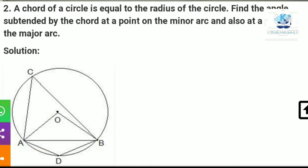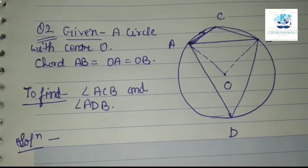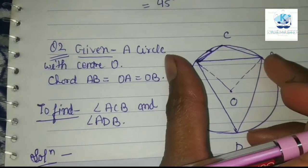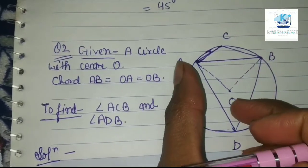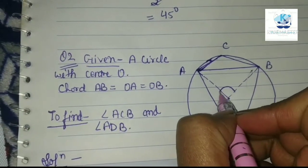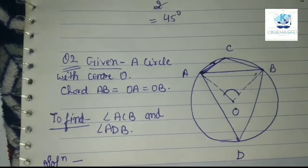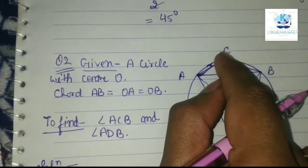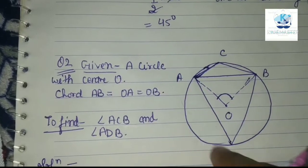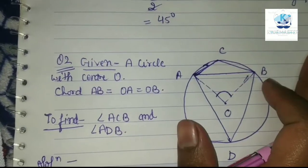Question 2: A chord of a circle is equal to the radius of the circle. Find the angles subtended by the chord at a point on the major arc and also at a point on the minor arc. We draw our own figure here. The chord AB equals the radius, meaning AB equals OA equals OB, so triangle AOB is an equilateral triangle and every angle is 60 degrees. One angle ACB is on the minor arc, and angle ADB is on the major arc — these are the two angles we need to find.